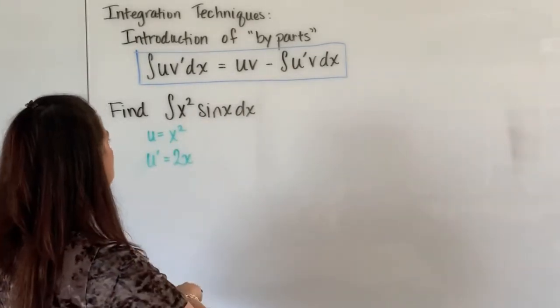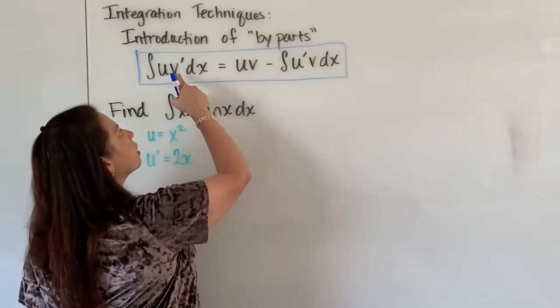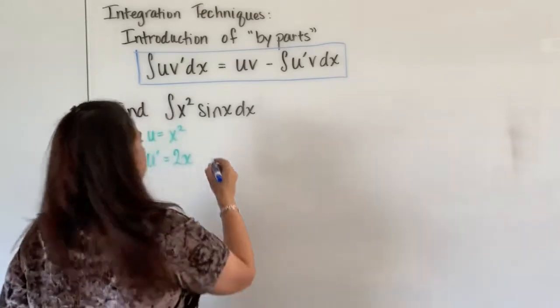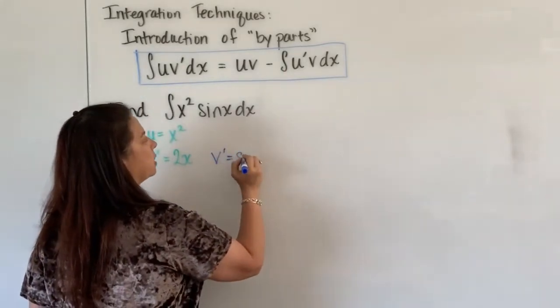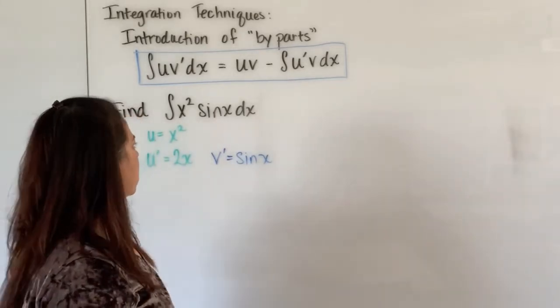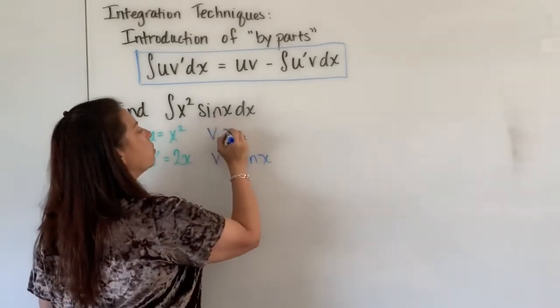The second function is our sine x, but that is our v prime, not the v, just v prime. So I'm going to put it here on the line with the derivatives and let's let this be our sine x. So v prime is sine x, now I need to figure out well what is v?